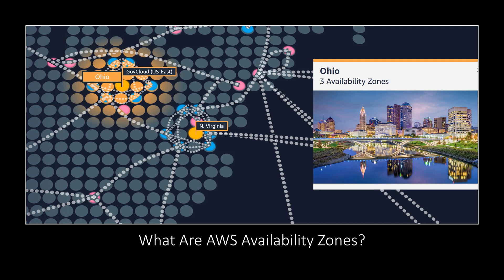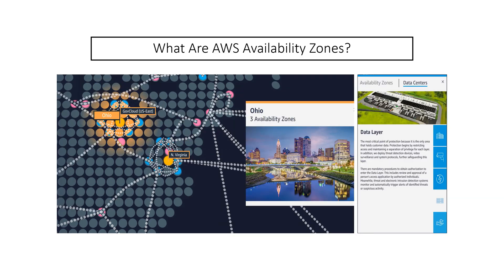What are AWS availability zones? Two or usually three or more availability zones make up each AWS region. Availability zones are fully isolated partitions of AWS infrastructure within an AWS region, with their own power infrastructure. AZs are physically separated by many kilometers from each other. Each availability zone is made up of one or more data centers in close proximity. To better isolate any issues and achieve high availability, you can partition applications across multiple AZs in the same region.